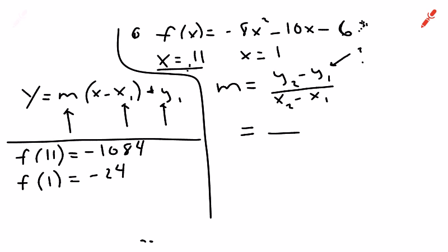Now I can substitute into the slope formula: negative 1084 minus negative 24, over 11 minus 1. Make sure you get both negative signs. The x value that matches negative 1084 was 11, and the x value that matches negative 24 is 1. Plugging that in, we get negative 106 as our slope.